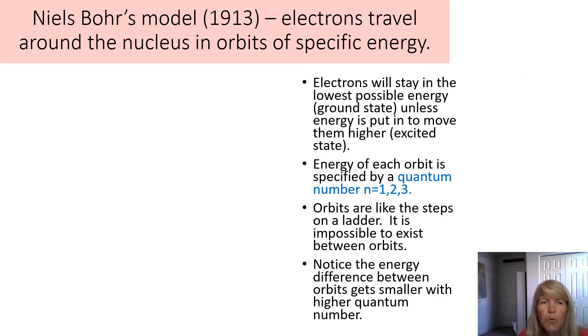So this is the Niels Bohr model of the atom. What he figured out is that these different colors represent electrons. So electrons are in different specific energy levels. And they stay in the lowest possible energy, which is called the ground state, unless energy is put in and moves them to a higher state, which is called the excited state. So you can think of an atom as having a nucleus. And then it'll have energy levels. And we describe these by the quantum numbers one, two, three, four, etc.